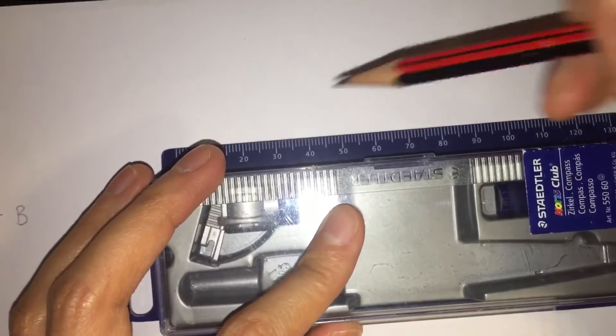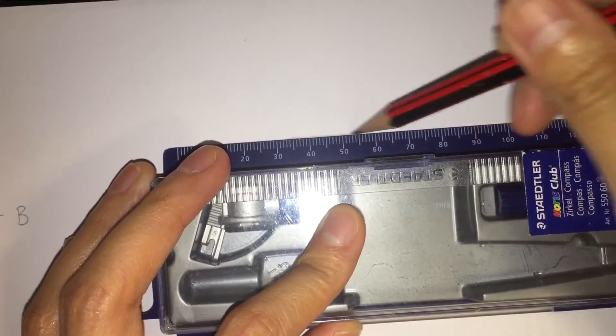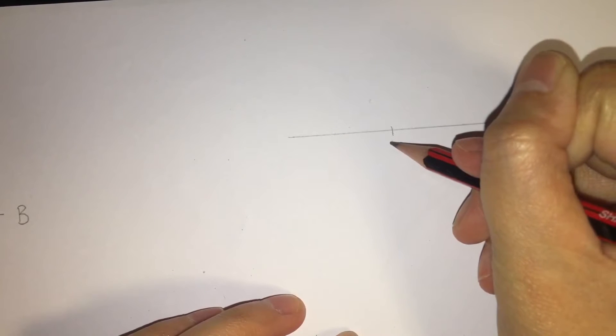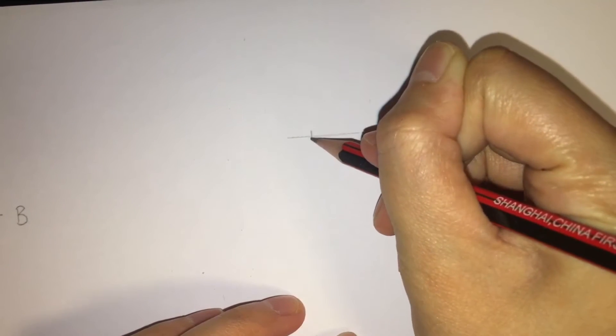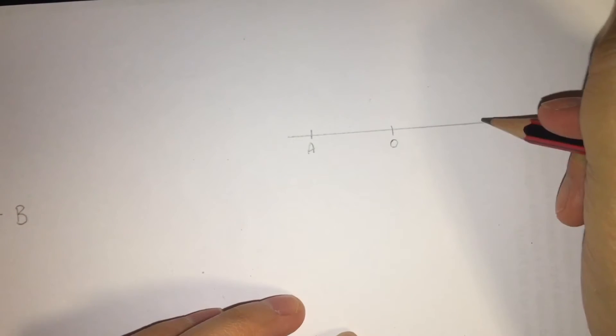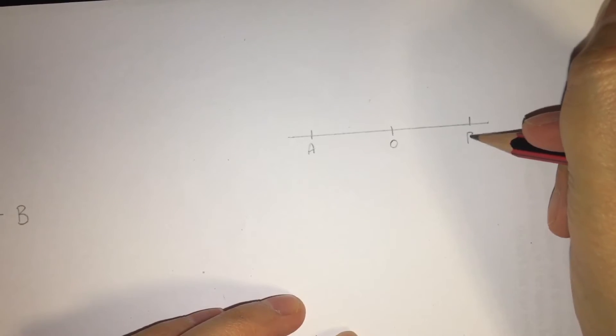First of all, I need to draw a straight line angle. A straight line angle means the angle has 180 degrees. And it is angle AOB.